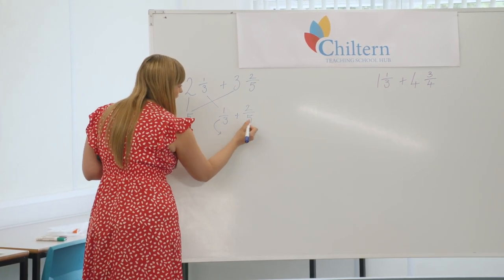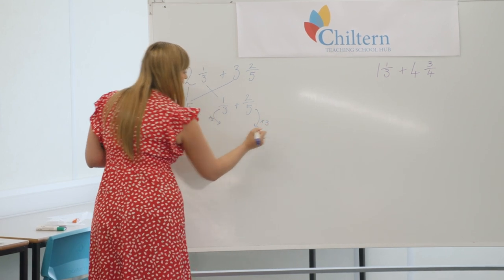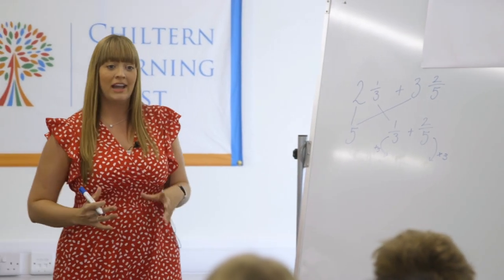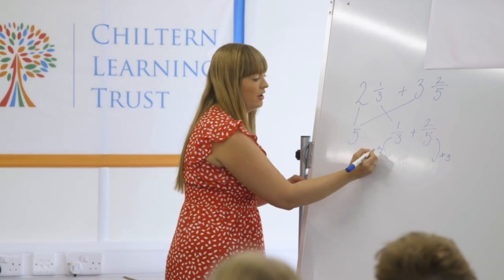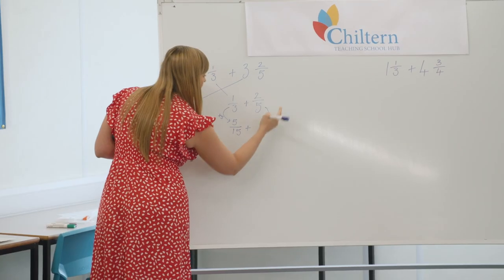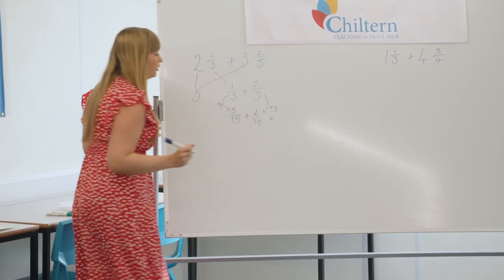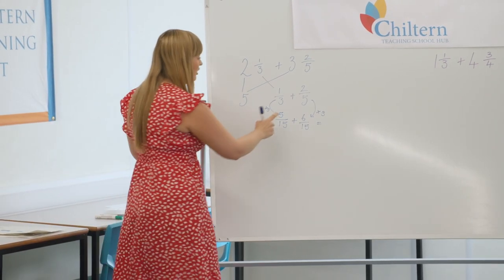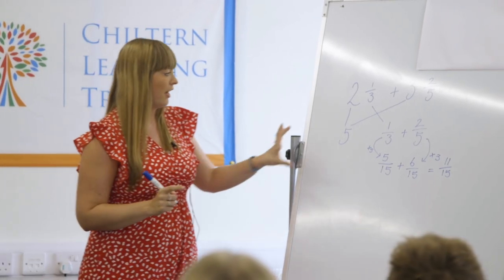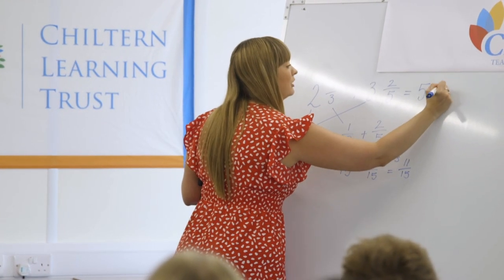What I mean by cross multiplying is I'm going to times this fraction by five — the denominator over here — and then times this fraction by three, the denominator over there. Whatever I do to the denominator, I must do to the numerator. So five times one is five over fifteen, add two times three is six over fifteen. Now they have the same denominator, I can add the numerators: five add six is eleven over fifteen. To get my final answer I pull together my whole number and my fraction, so my final answer is five and eleven over fifteen.